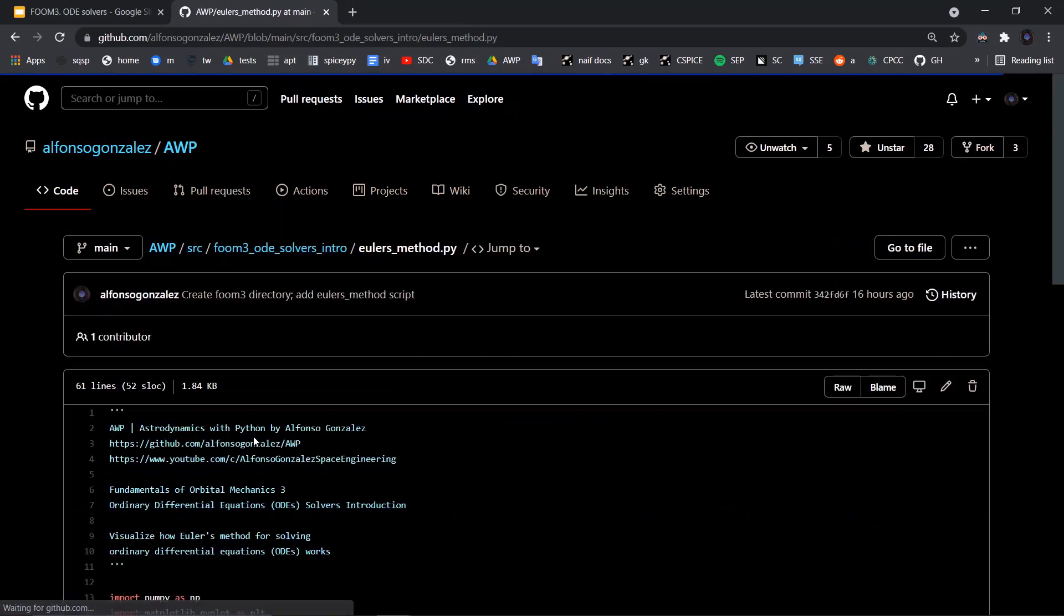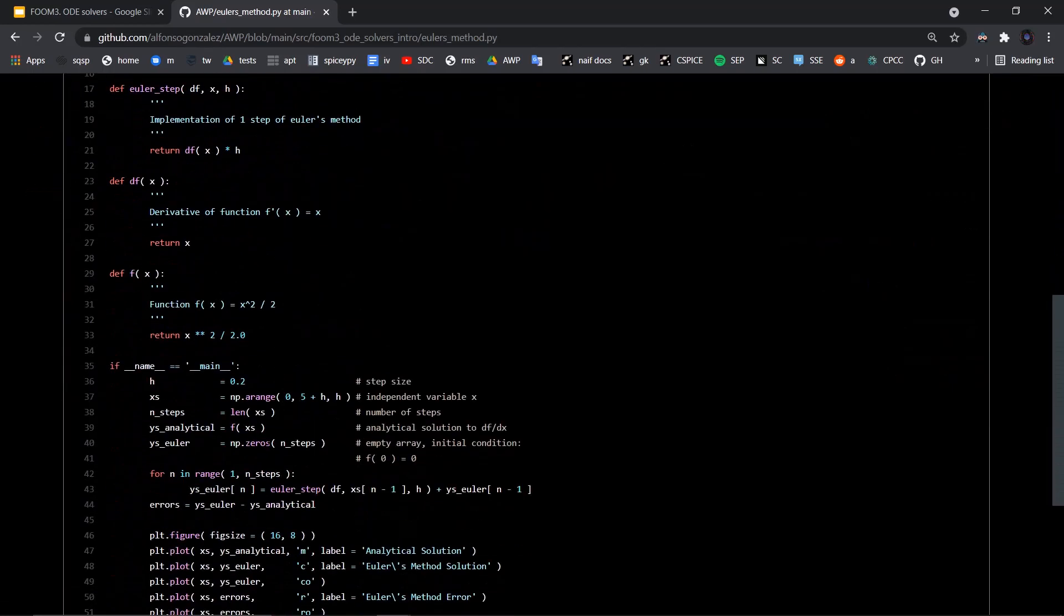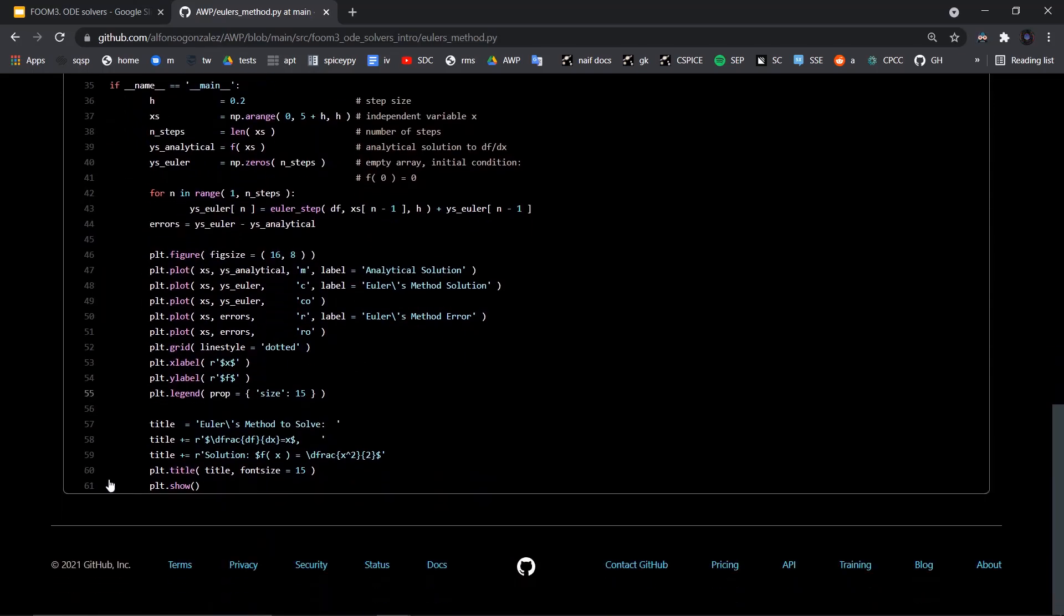and you can start with the Euler's method. So that Euler's method plot right here, this is just a script that I used to make that plot. So you have your Euler's step derivative of the function, the function itself, and then just doing all the plotting.